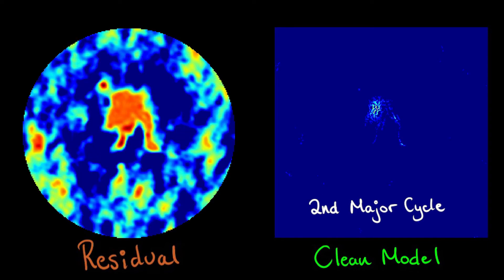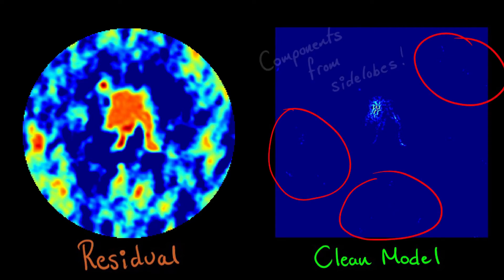Here, emission from a side lobe of the main emission region in the nebula ends up in our clean model, since we haven't excluded this region from our clean mask.